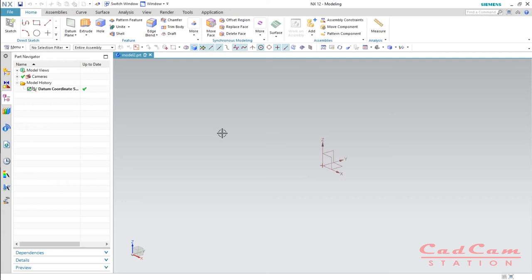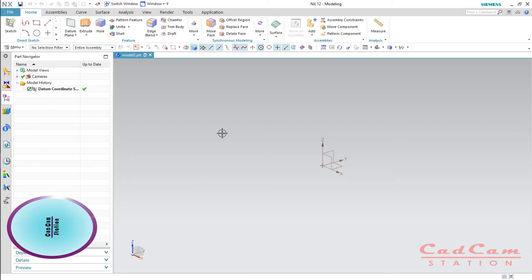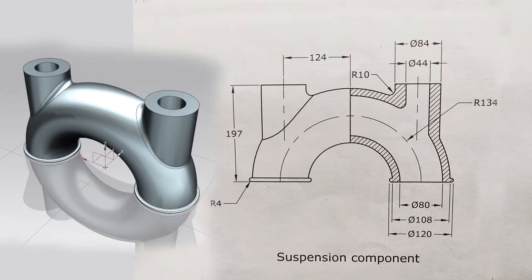Hello friends, welcome back to CAD CAM Station. Today in this video tutorial I'm going to show you how you can design a simple mechanical component. This tutorial is for beginners, so make sure you watch this video till the end. As you can see on your screen, we have a template model of a mechanical component called a suspension component, which is a very important part of a suspension assembly.